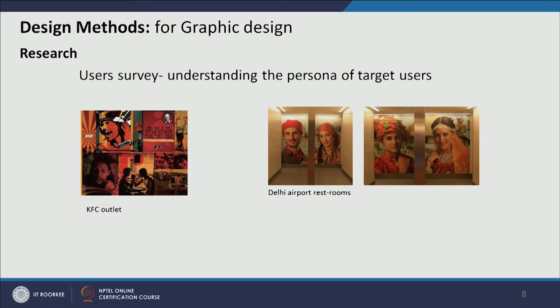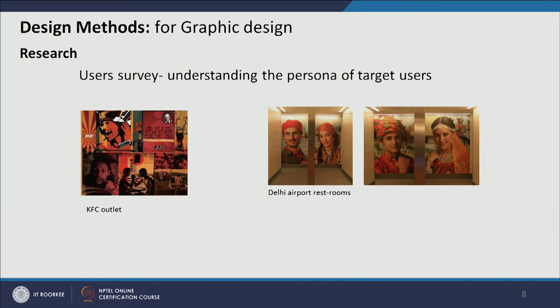Talking about user survey, the design should also go with the mood of the users. For example, a KFC outlet is mostly targeted towards teenage people who go there for KFC buckets. Photographs with vibrant colors and a similar kind of mood are depicted. It also talks about the brand identity — the brand's color palette has been used. It also has a retro look, giving an association that KFC is a long-established brand. The color evolved from all these things is based on the target audience and the brand identity.